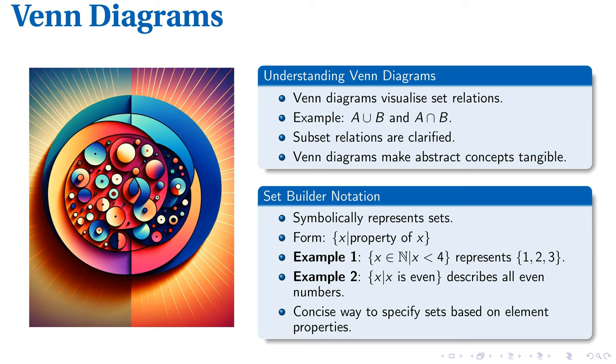Venn diagrams play a pivotal role in visually representing set relations and operations, such as union and intersection. For example, the union of sets, spoken as A ∪ B, and the intersection, spoken as A ∩ B, are readily illustrated through overlapping circles in a Venn diagram. This depiction simplifies understanding and offers a tangible interpretation of abstract set operations.